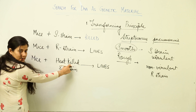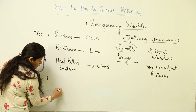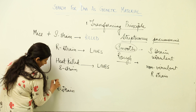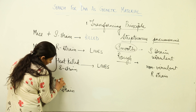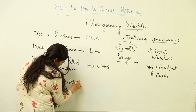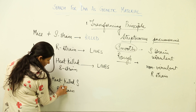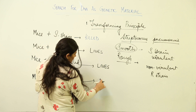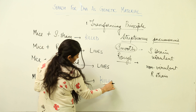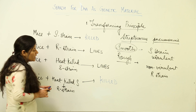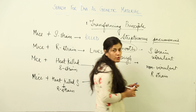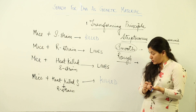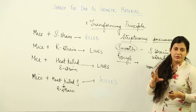In the final step, Griffith combined the heat-killed S strain with living R strain and injected this mixture into a mouse. This time the mouse was killed again, leading Griffith to propose that there was a transforming principle — some molecule behind the killing ability of the S strain.